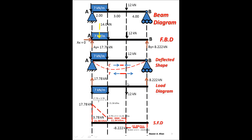Let's construct our shear force diagram now. It's a fairly simple concept — we start from left going to the right, using the load diagram. Starting from the left, we increase by 17.78 kN right at that point, so there's a direct increase of 17.78 kN. Between the left side and the end of the UDL, we have a uniformly distributed load, so it will be a straight line section. However, as you go from left to right, it is a decreasing situation.